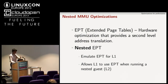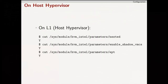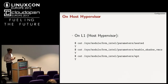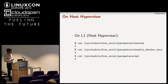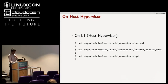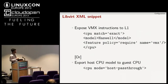Here's a bit of configuration. These are the parameters you need to ensure are enabled on your host. First is the nested parameter for the kvm_intel module. Then enable VMCS shadowing, which is available from Haswell architecture. Then you enable EPT — EPT is enabled by default.